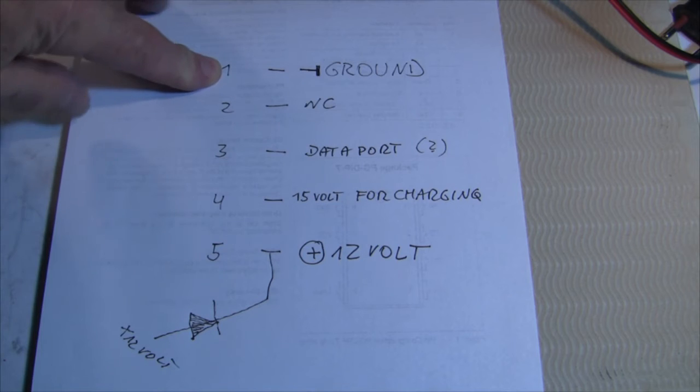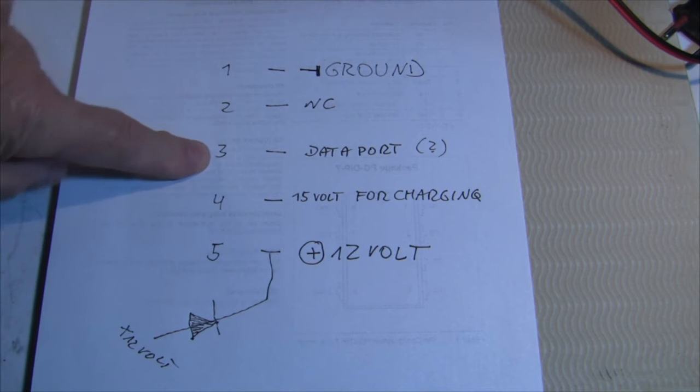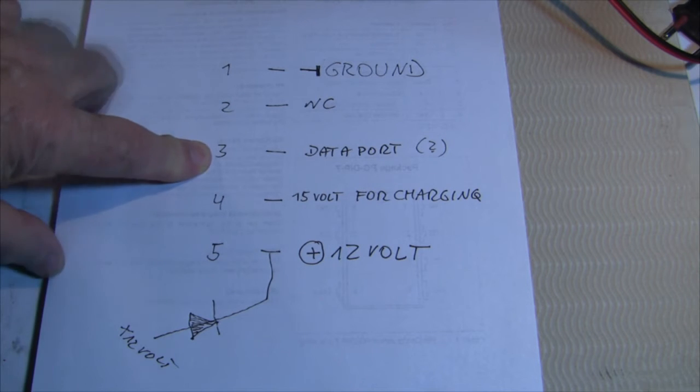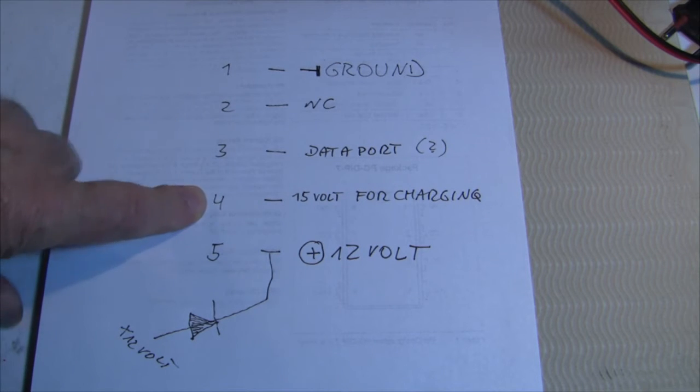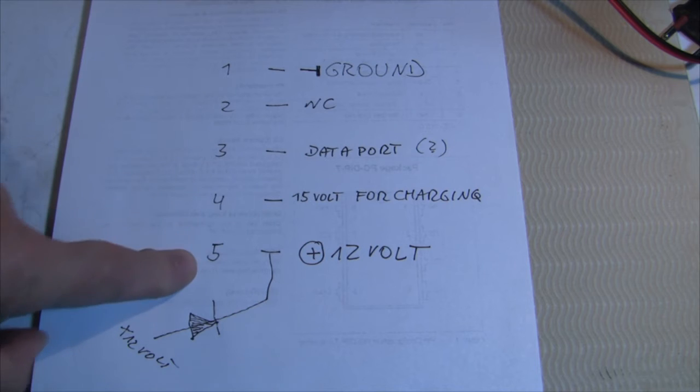Pin 1 is minus ground. Pin 2 is not connected. Pin 3 is a data port, I don't know really. Pin 4 is a 15 volt output for the internal charger. It takes 30 hours to charge the battery normally, but I don't use it. Number 5 is a 12 volt input.